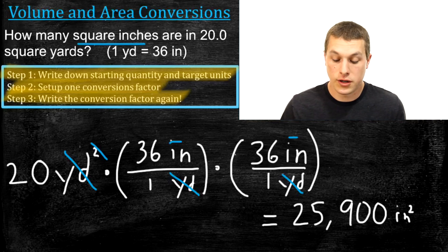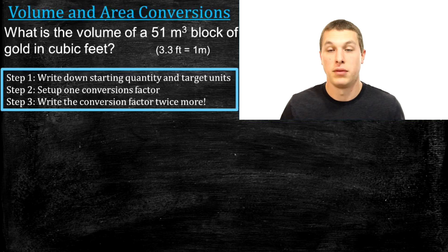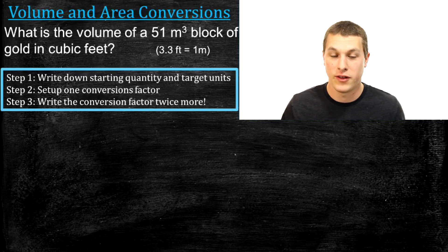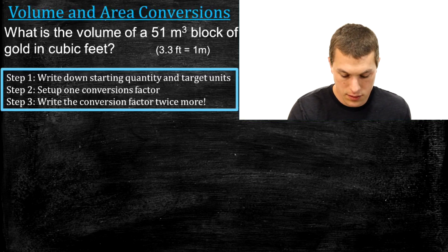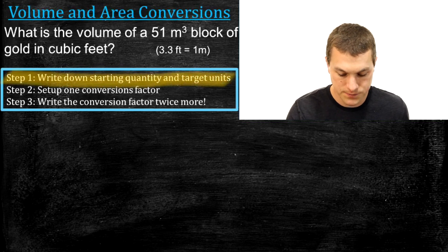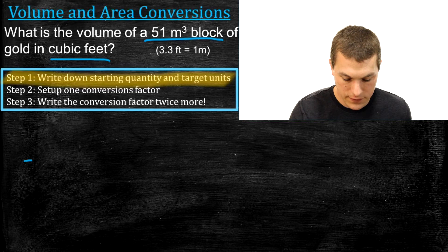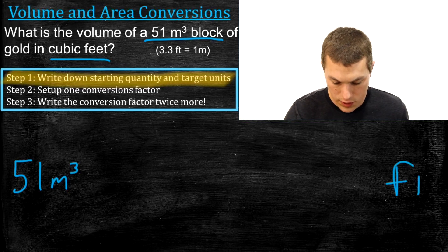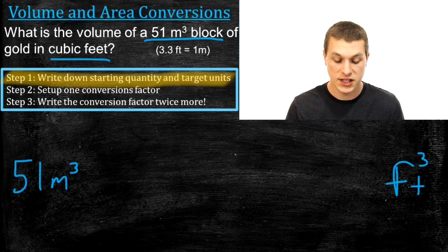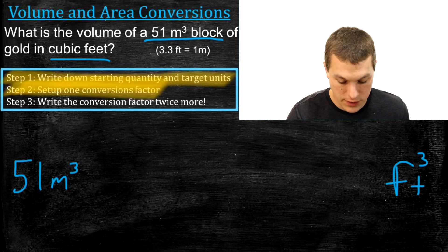The next problem is a volume conversion: what is the volume of a 51 meters cubed block of gold in cubic feet? This is actually a high-end estimate for the total amount of gold ever mined — 51 cubic meters doesn't sound like much, so we'll convert to cubic feet for a better sense of scale. Step one: our starting quantity is 51 meters cubed, and we want to go to cubic feet.